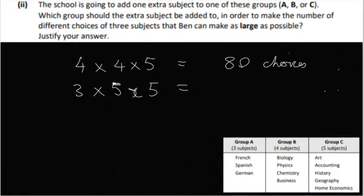Let's see what we get. We're going to get three by five by five is 75 choices. So just to be sure, we go on to the next one. Three by four and five. Now, group C will become a six. So three by four by six is 72. So group A is the answer.